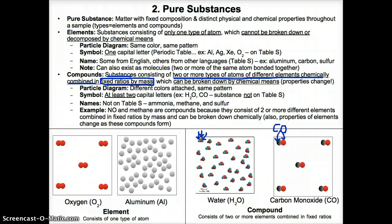Since compounds are substances with two or more different types of atoms of different elements chemically combined in fixed ratios by mass, they can be broken down in reverse chemically. Because compounds consist of different elements, they can be broken down chemically into simpler substances — specifically into the simpler elements that made them up. Since they're combined chemically, they can be broken down backwards into the elements that made them up.